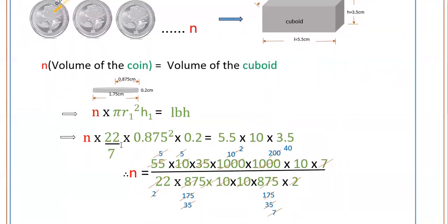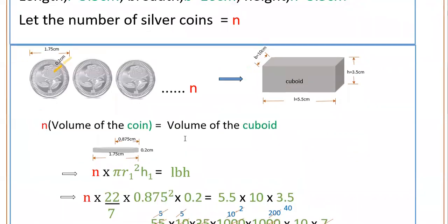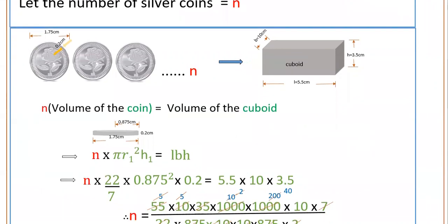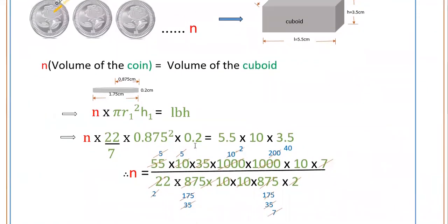So n times π, which is 22 by 7, times R1 is 0.875 squared times height is 0.2 equals LBH, which is 5.5 times 10 times 3.5.